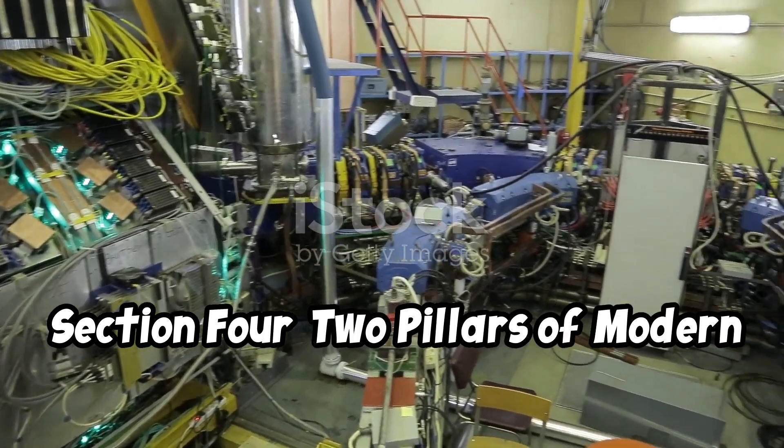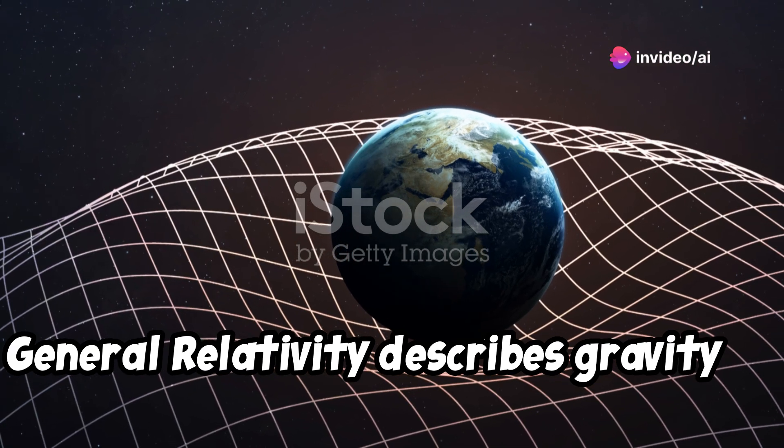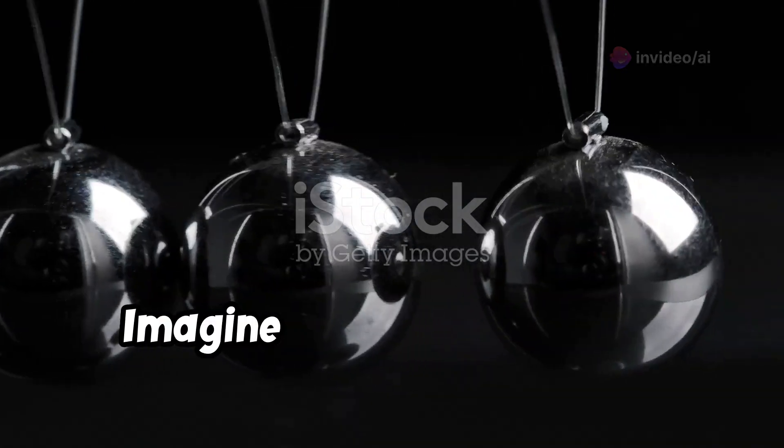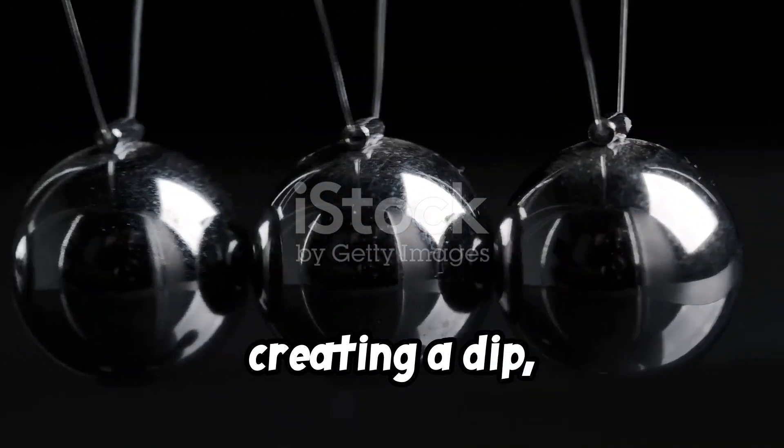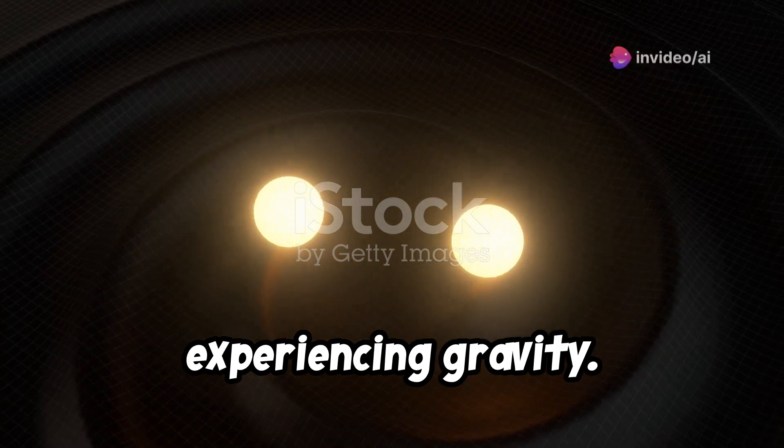Section 4: Two Pillars of Modern Physics. To appreciate a unified theory, we must grasp the essence of the two pillars it seeks to unify. General relativity describes gravity as the curvature of spacetime caused by mass and energy. Imagine a bowling ball on a trampoline creating a dip, like a star warps spacetime. Objects move along this curvature, experiencing gravity.